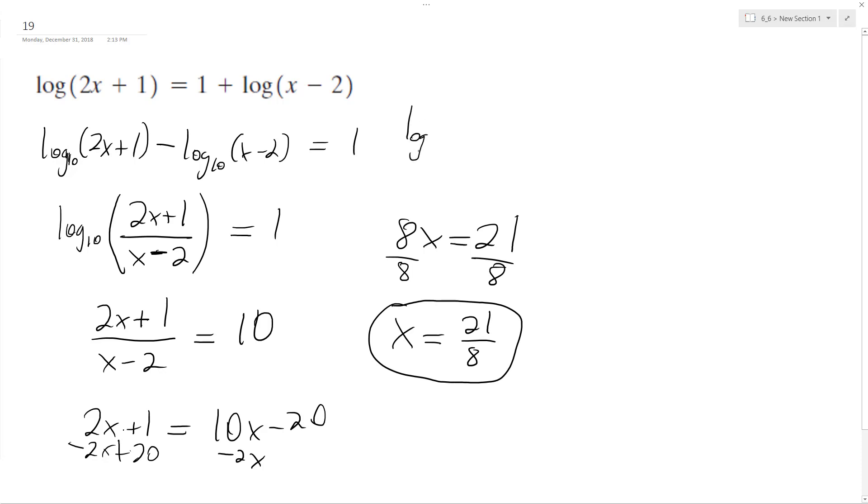So log base 10. So this ends up being 21 over 4 plus 1 over 21 over 8 minus 16 over 8. So this ends up being